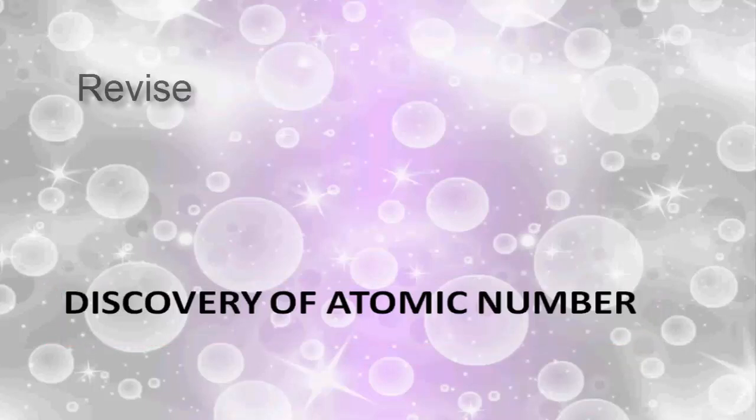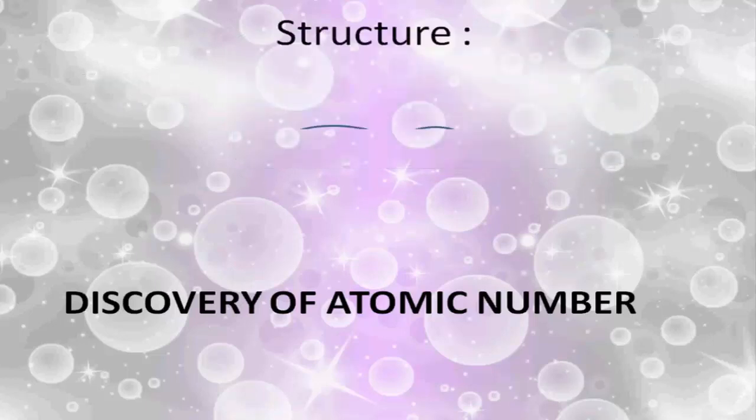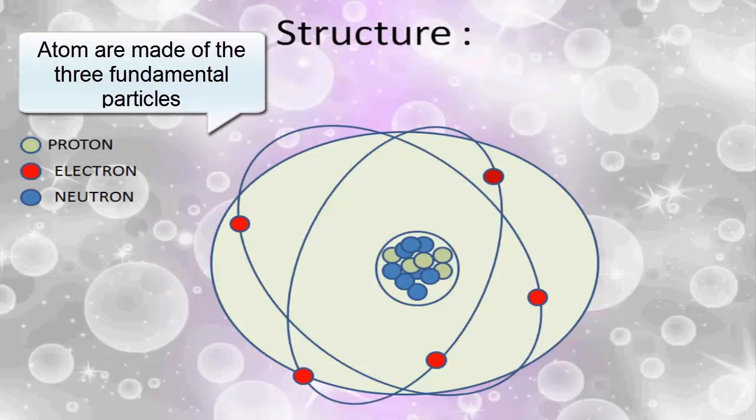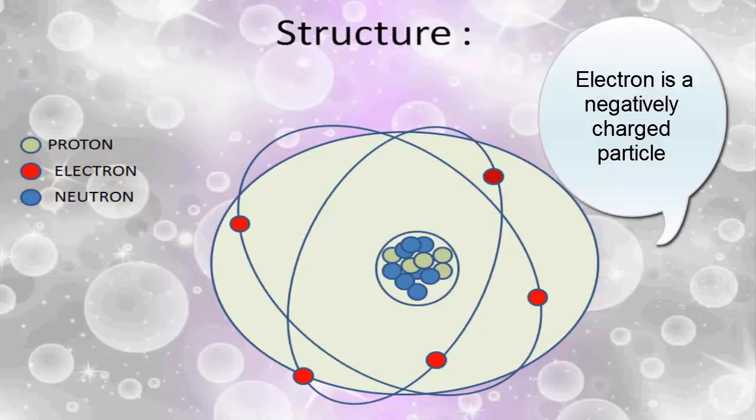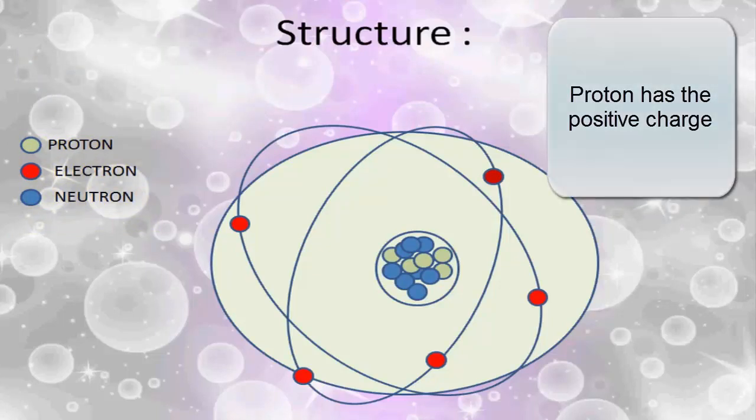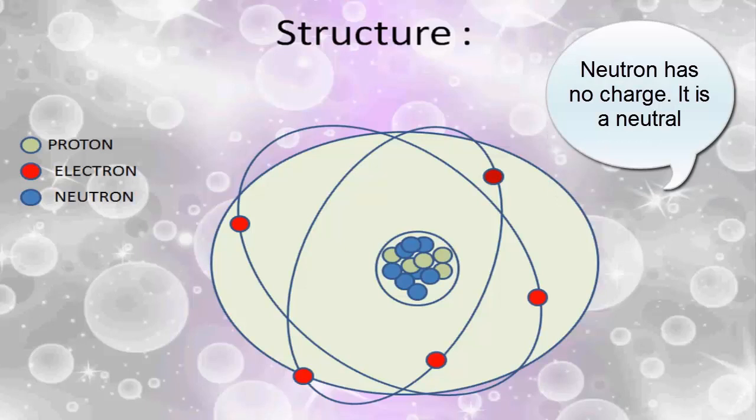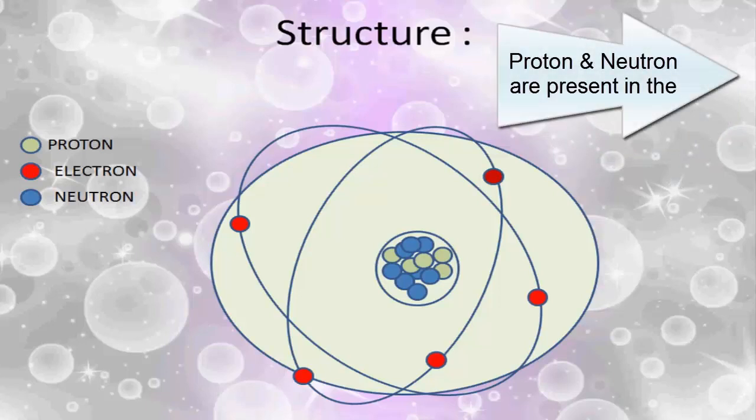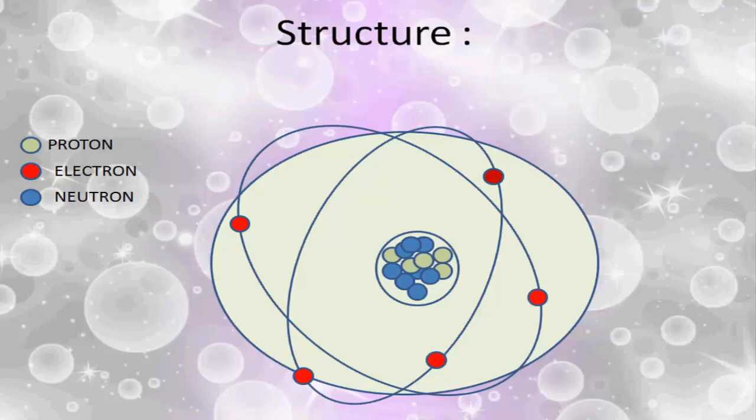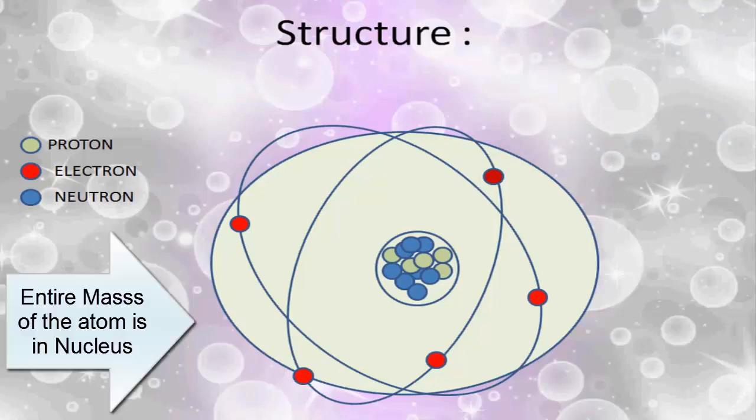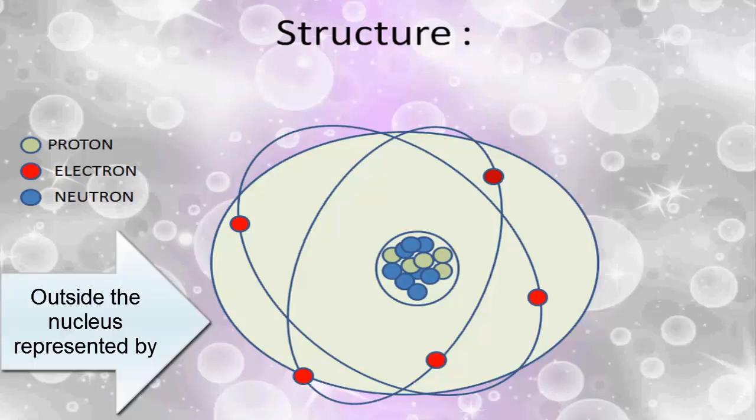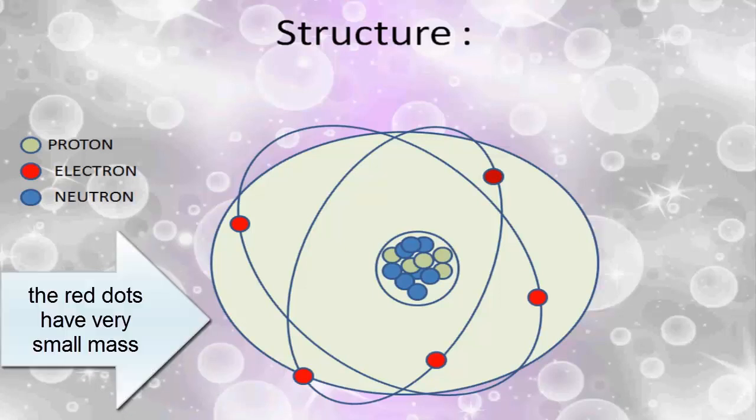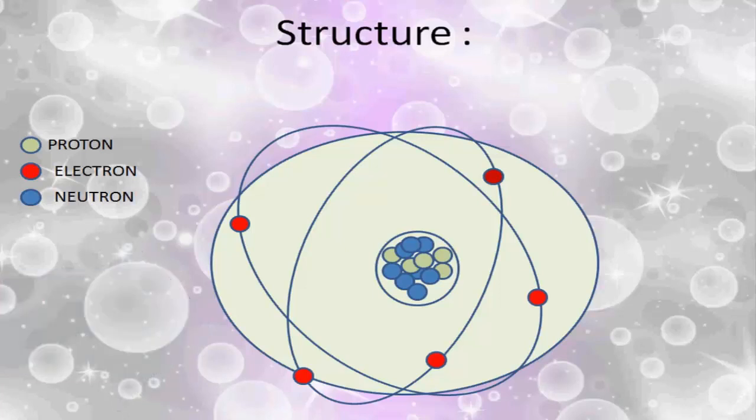So we all know that atoms are made of three fundamental particles which are electron, proton, and neutron. Electron is a negatively charged particle, proton has the positive charge, and neutron has no charge, it is neutral. According to this structure, proton and neutron are present in the small nucleus at the center of the atom, and almost the entire mass of the atom is in the nucleus because the electrons which are outside the nucleus, which I have represented by the red dots, have very, very small mass.